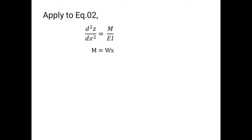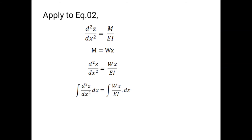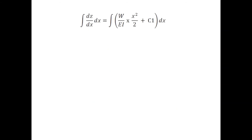We need to find the relationship between the deflection and the above explained variables. To do that, we have to double integrate this equation with respect to x. After integrating once, we get an equation with constant c1. Integrating a second time gives another equation with constant c2. Now we have a relationship between the deflection of a simply supported beam with applied load, modulus of elasticity, and second moment of inertia.